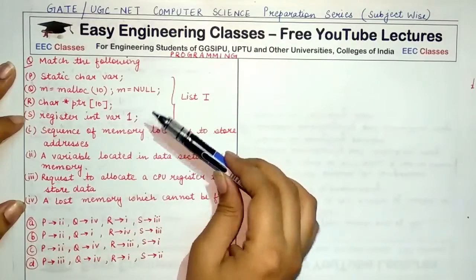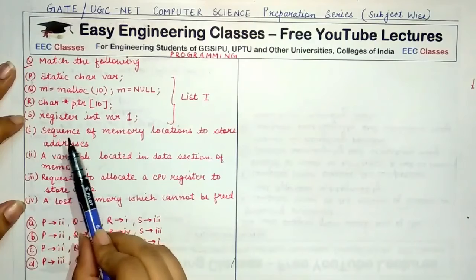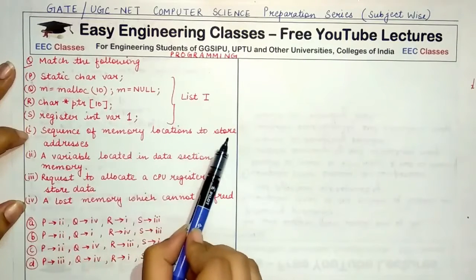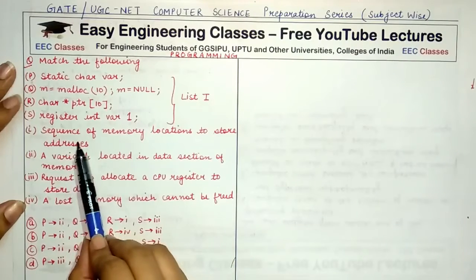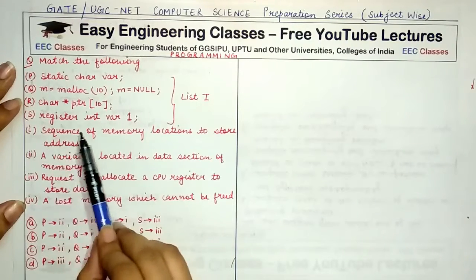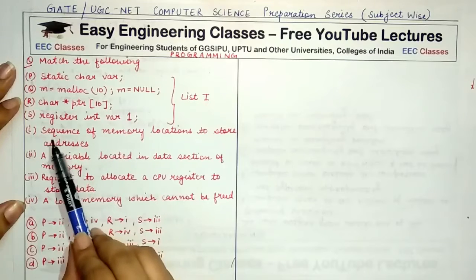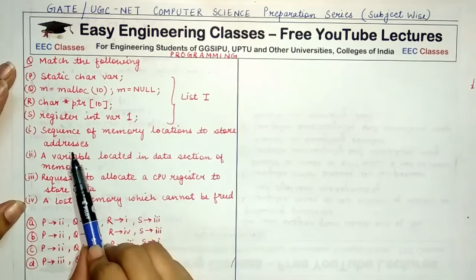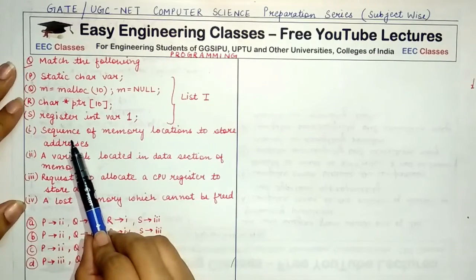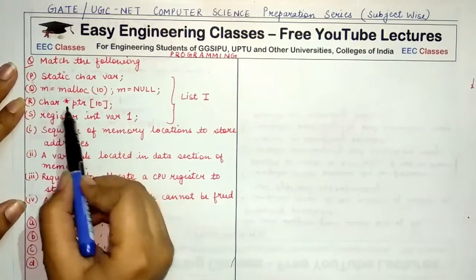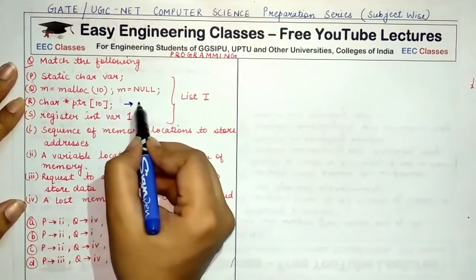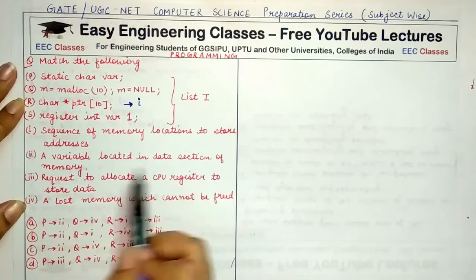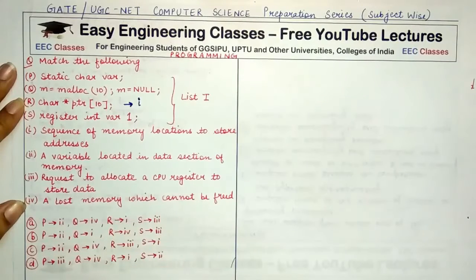Now matching to list two: the first statement in list two says 'sequence of memory locations to store addresses.' From the phrase itself you can tell it is talking about an array — specifically an array of pointers, which stores addresses. This corresponds to option R, char* ptr[10]. So list-two item 1 matches R.